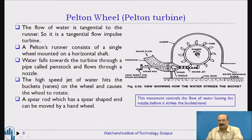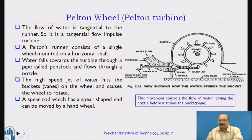When rotation starts, the hydraulic energy is converted into mechanical energy, which is passed to the shaft. The shaft rotation starts as it is fixed to the runner, and the shaft is coupled with a generator. The generator starts production of electricity — that is why we call this a power producing machine. The casing plays no role in energy formation; it only protects the water from splashing outside. After hitting the blade, the water flows through the tailrace and can be used for irrigation and other purposes.